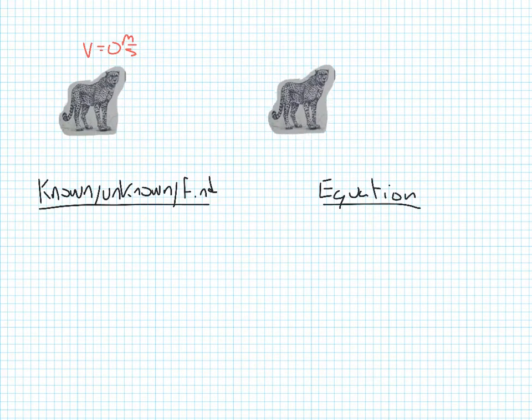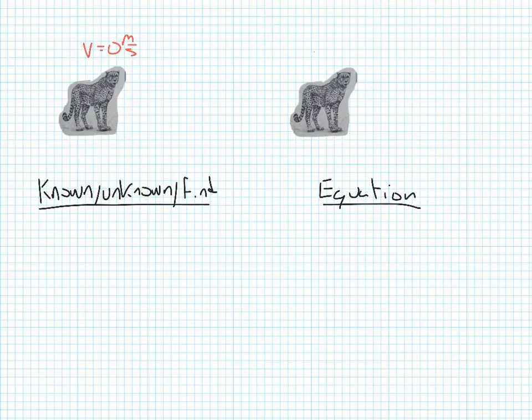And at some point, the cheetah reaches this top speed for this problem, which again isn't really the top speed of a cheetah. But for our purposes, that was 72 kilometers per hour.